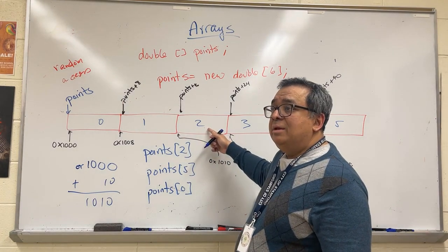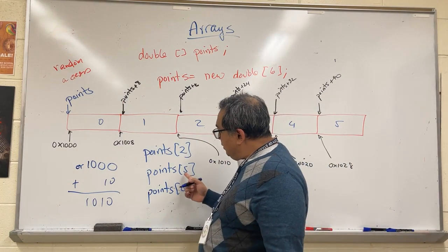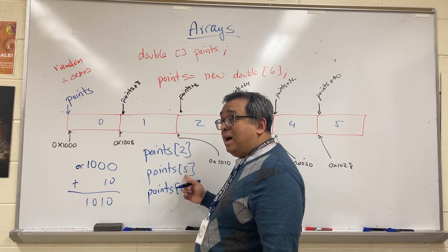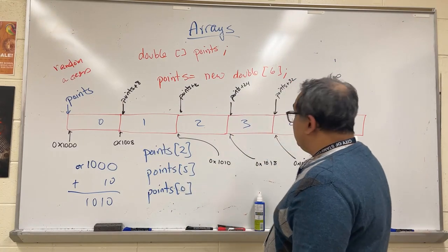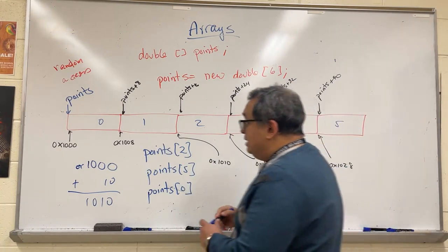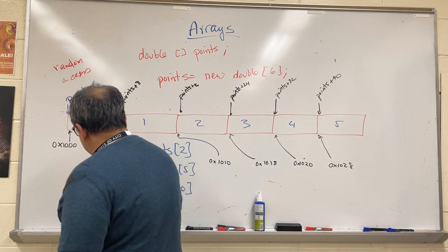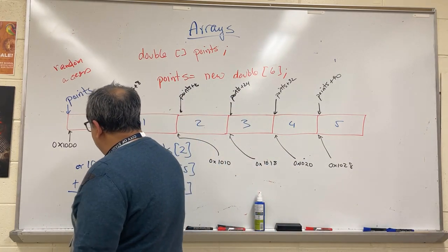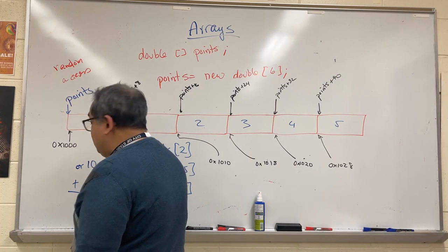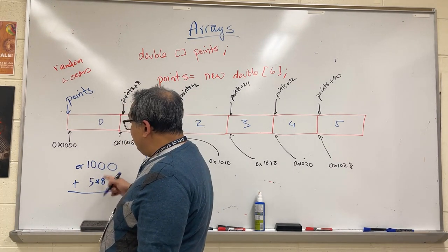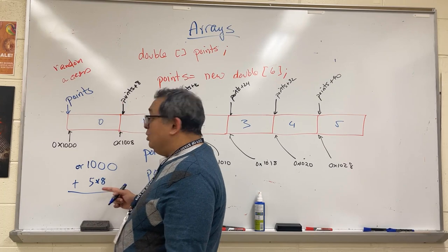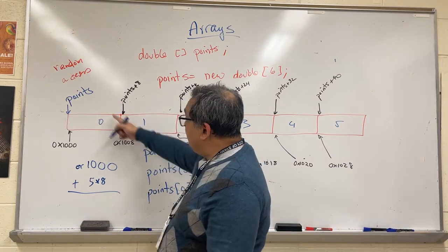Now if I wanted to do a similar calculation for item five, which is the sixth item in here, instead of doing this calculation I would just do five times eight, then I would add that to this number. Notice if I wanted to just find out the first location, I would do zero times eight and add that to this location.